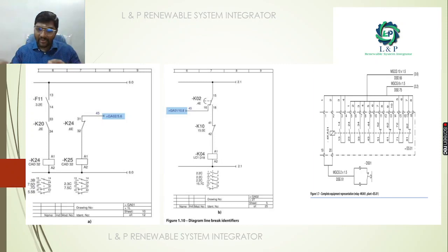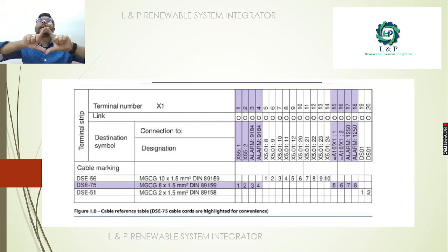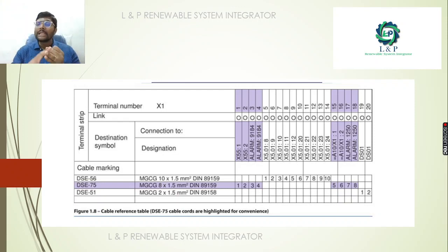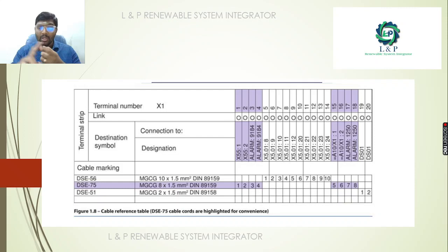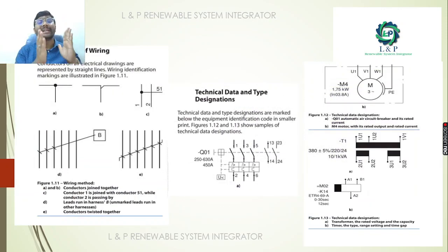Here is an example of complete equipment representation — whether it's a relay or a plant — and how to represent it. Next, we need to draw a cable reference table, which is very important. We need to highlight the cable cores, mention the terminal number, link to destination symbol showing where we are connecting, cable marking, and cable size. All these things need to be mentioned in the cable reference table.